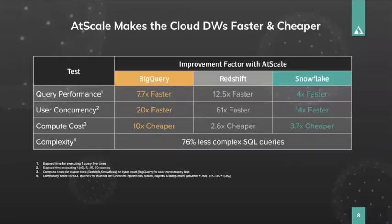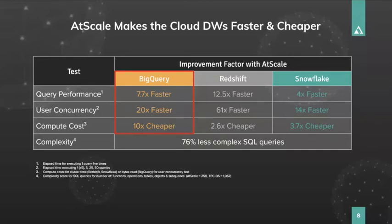Not only do you get the power of Excel on Google BigQuery, we also provide significant query performance benefits — over seven and a half times faster than BigQuery by itself. From a concurrency perspective with 25 to 50 concurrent users, AtScale is up to 20 times faster. And when it comes to reducing cost, we are 10 times cheaper. All these numbers were computed using a TPC-DS 10 terabyte data set. You can download the full report from our website to see exactly how everything performed.